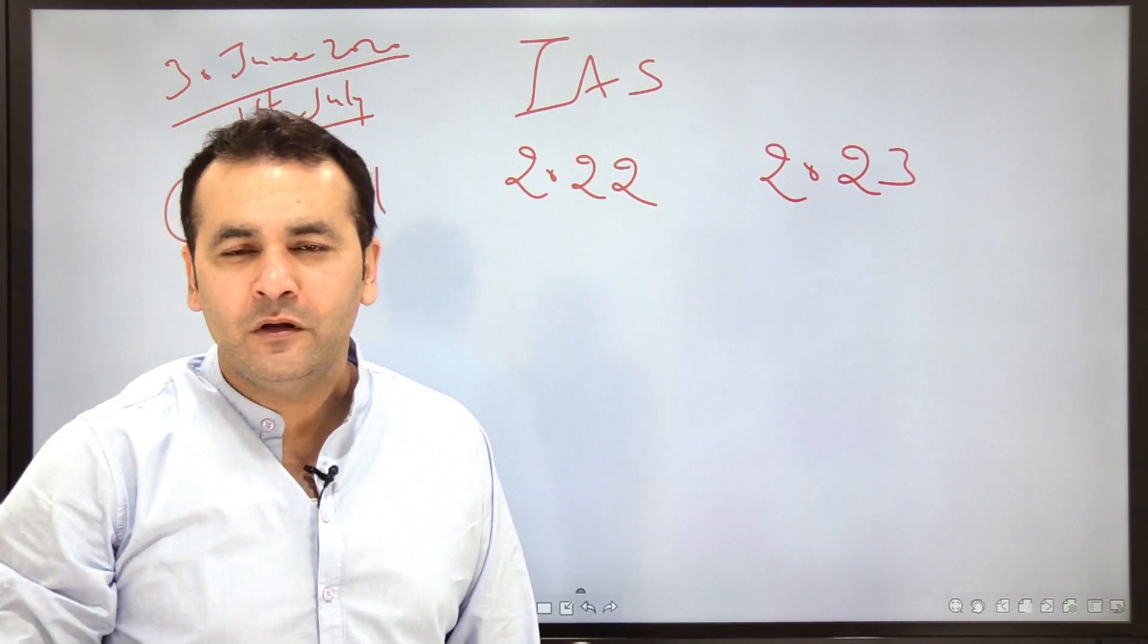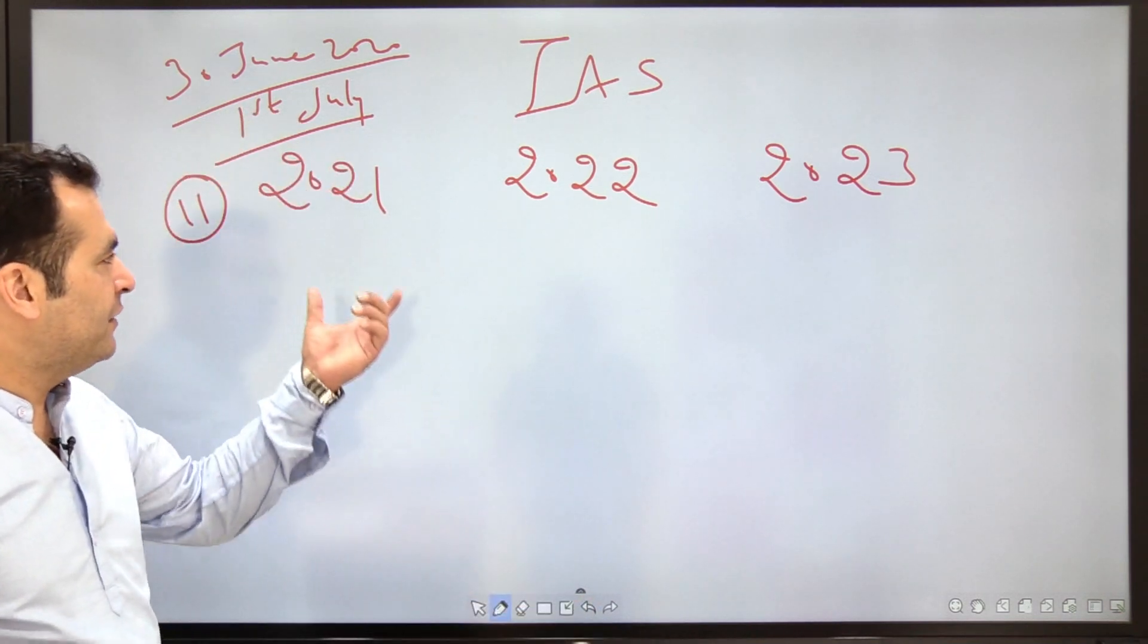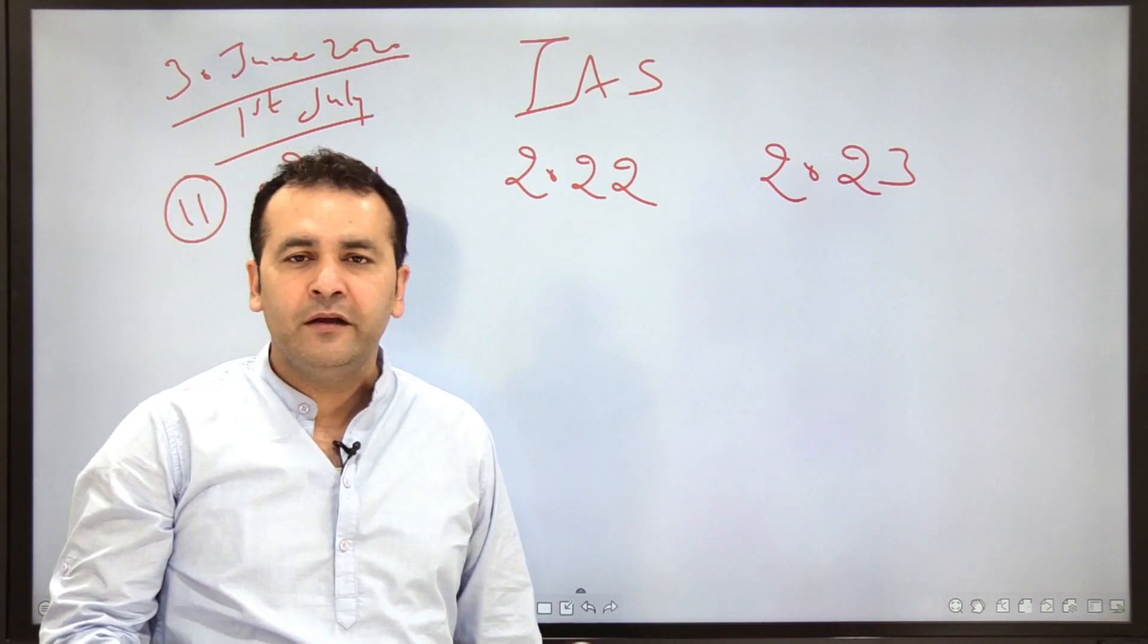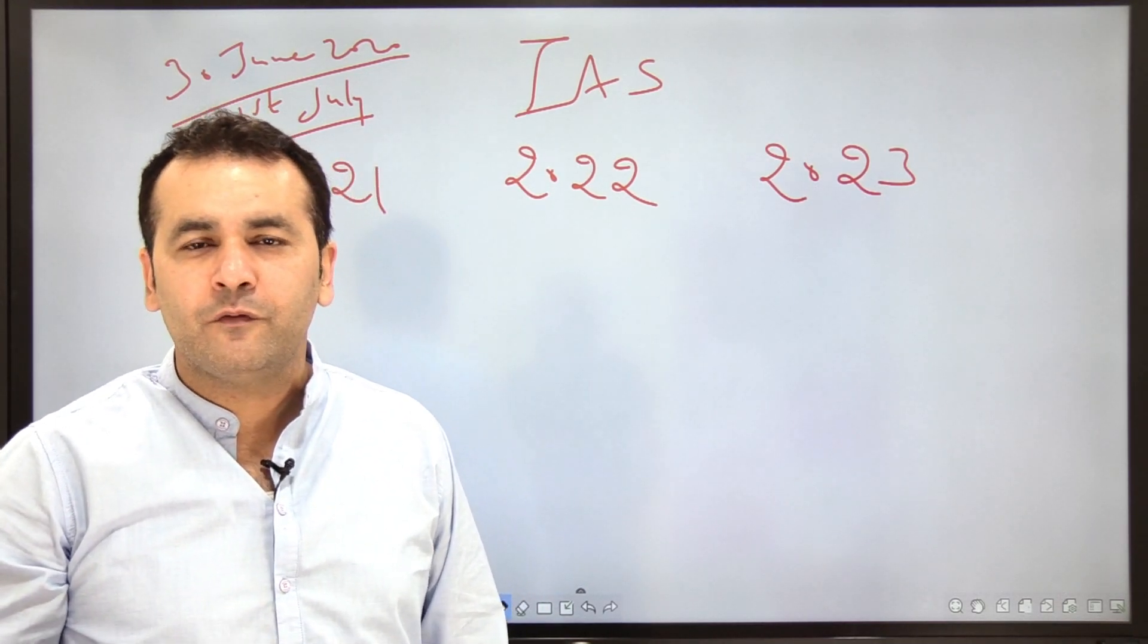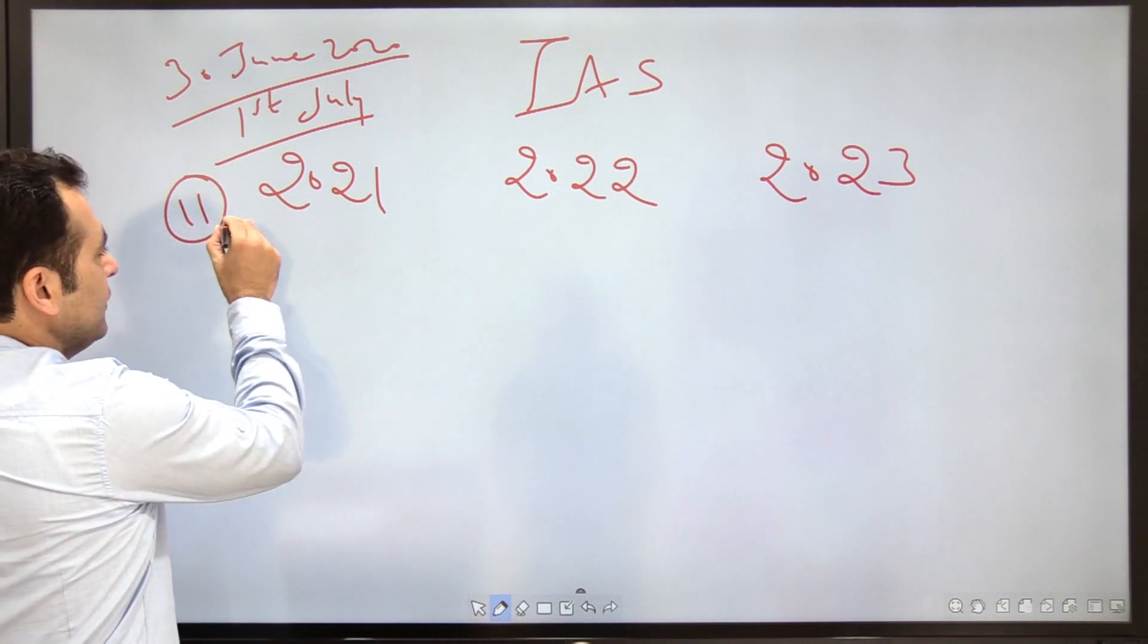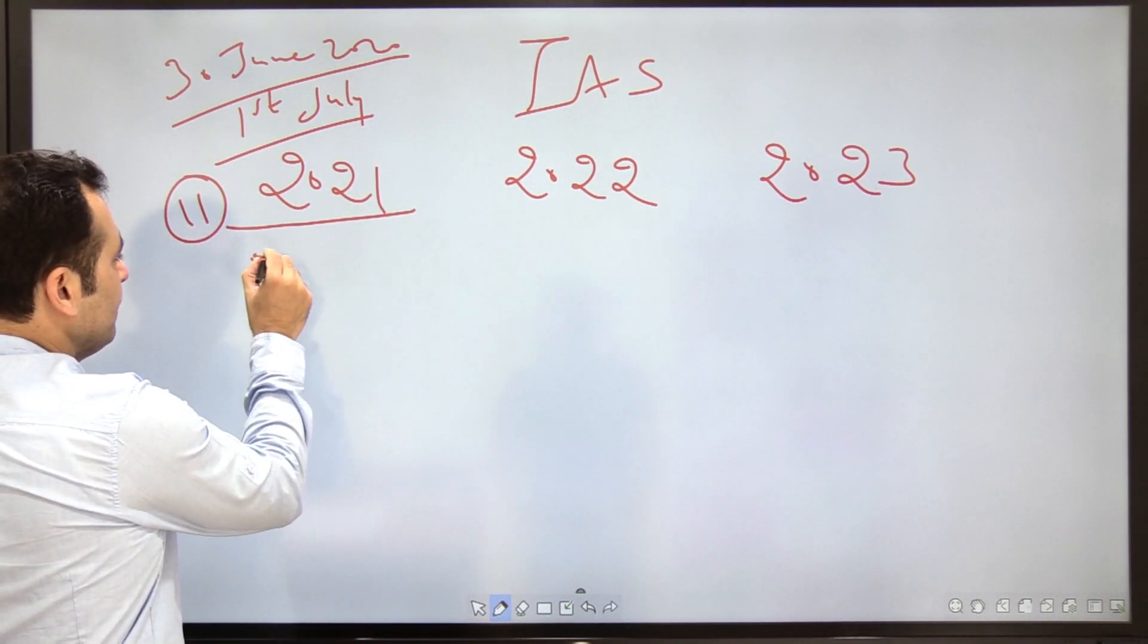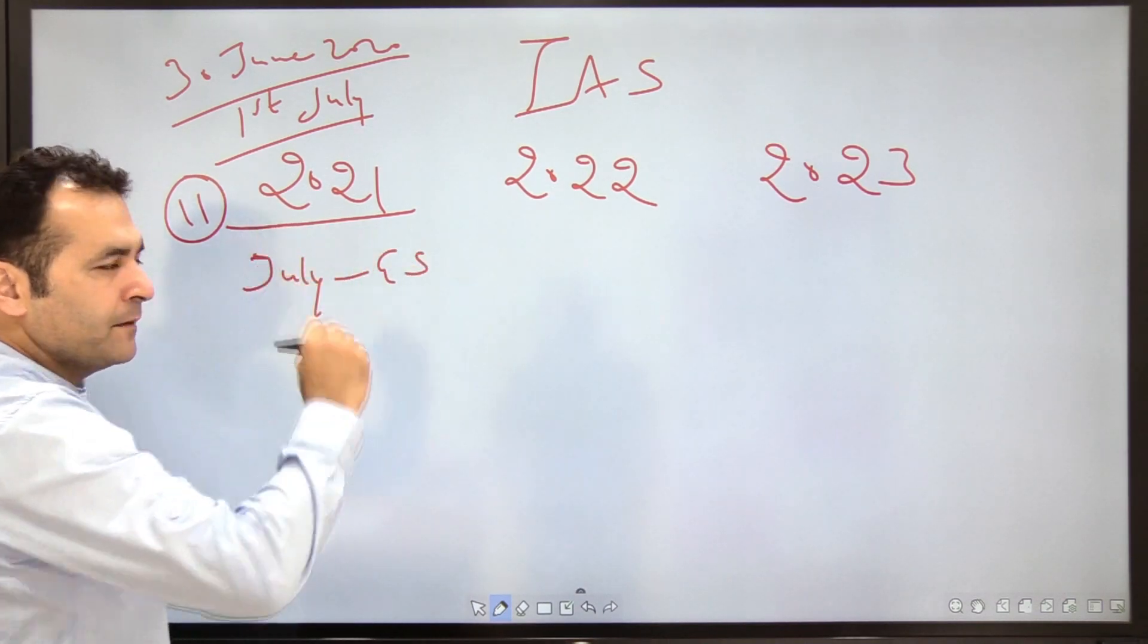This is a wake-up call as well as a call to action for those who want to appear in 2021. If you delay, that means you are not a serious candidate, not one who is aiming for 2021 with 100% commitment. If this is your commitment, you have to plan in such a way that from July 1st, you start your GS component.